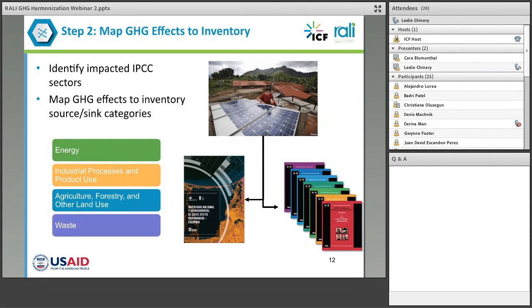That brings us to step two. Once the causal chain is mapped, we need to map the effects to the traditional IPCC sectors and source categories. The figure here shows the IPCC sources on the bottom right and the work on the Colombia inventory as an example on the left. Sources in IPCC could be in the energy sector, in the industrial process and product use sector, in the AFOLU sector, or potentially in the waste sector. Once the causal chain is mapped, the work has to be done to connect it to the sectors and vocabulary used by IPCC.